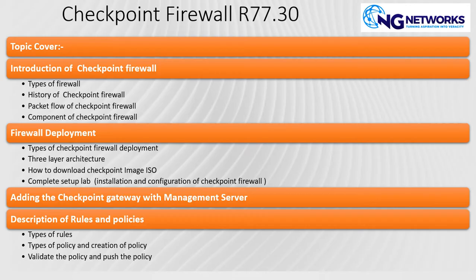We'll do a complete lab setup for configuring and installing the firewall, including required resources. In Check Point firewall there are two major components: Check Point Management and the Gateway. To configure policy you need the management server; to activate the policy you need the gateway. We'll also cover adding the Check Point gateway with the management server and configuring the trust relationship between them.